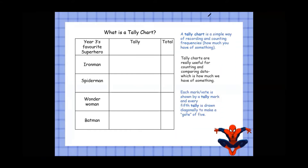Each mark or vote is shown by a tally mark, and every fifth tally is drawn diagonally to make a gate of five. I'll show you here: one, two, three, four, five — and again, so that would be six, seven, eight, nine, ten.